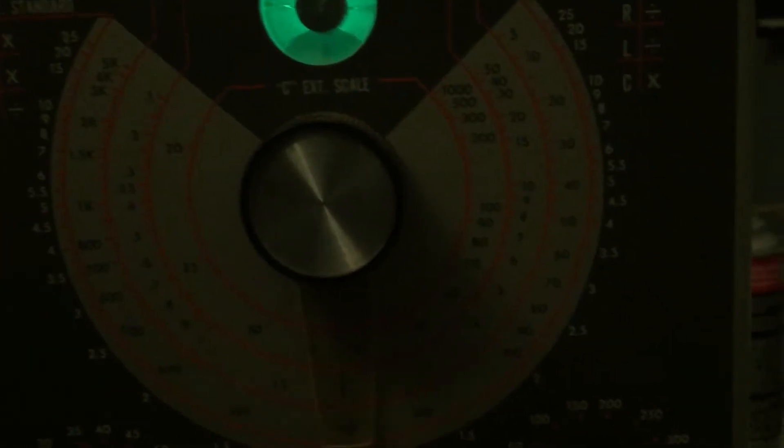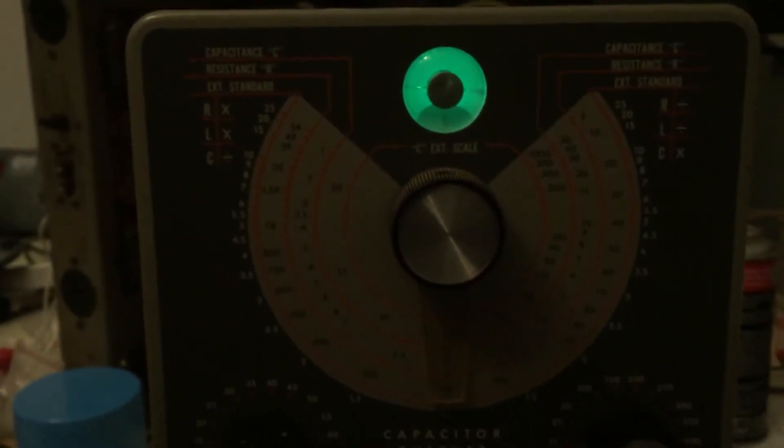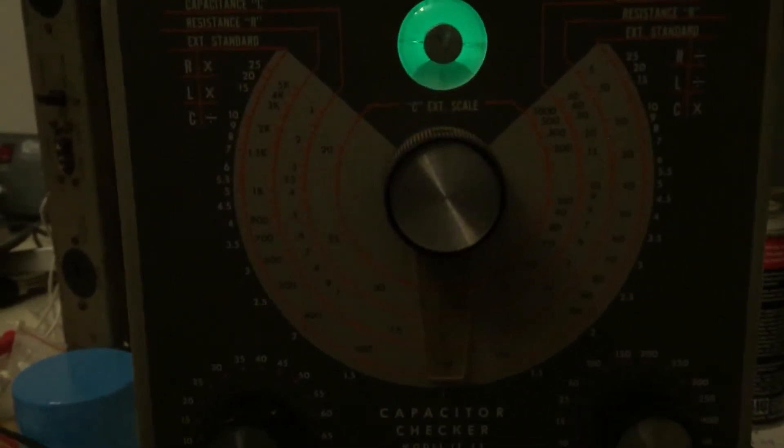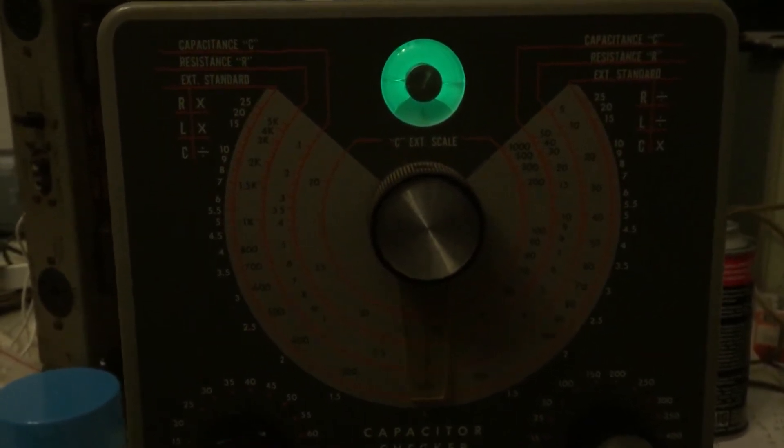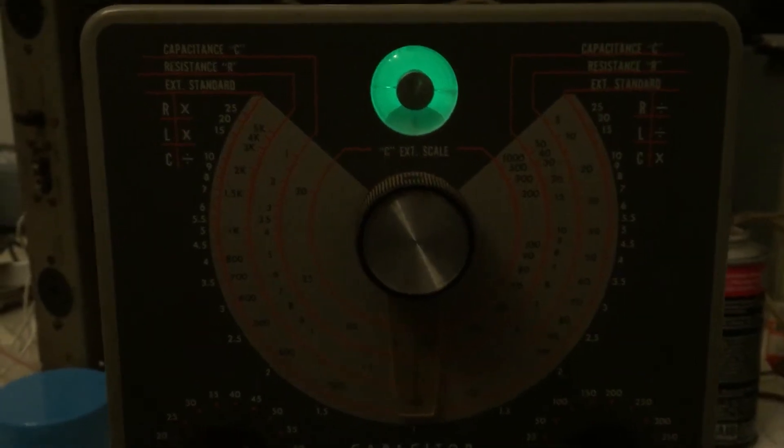But what I want to show you is I have a capacitor here. This is an old one, it came out of the National NC 173. It's a .01 microfarad capacitor rated at 400 volts and this is probably one of the primary reasons why people plug in old radios and equipment and it just sets on fire and dies. This tester, probably its most useful function, is to show why that happens.